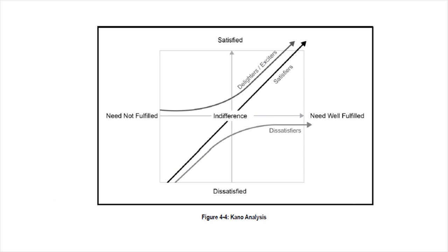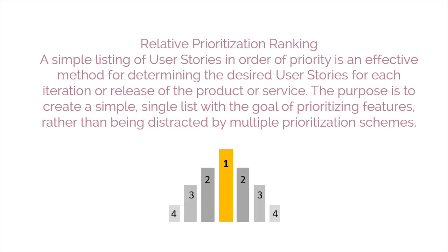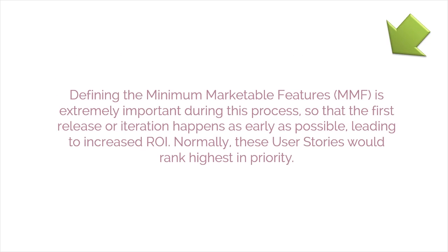Figure 4.4 depicts an illustration of the Kano analysis. The third method to plan for delivering value is relative prioritization ranking. This method entails a simple listing of user stories in order of priority, and is an effective method for determining the desired user stories for each iteration or release. The purpose is to create a simple, single list prioritizing features. Defining the minimum marketable features, or MMF, is extremely important so that the first release happens as early as possible, leading to increased ROI. Normally, these user stories would rank highest in priority.